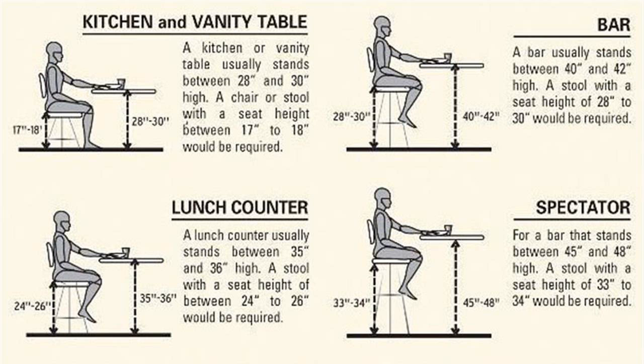To determine the number of bar stools you need, allow between 26 and 30 inches between the center points of each bar stool. For example, for a 110-inch long bar, divide 110 by 30 to get 3.66. You should purchase 3 bar stools for this bar.